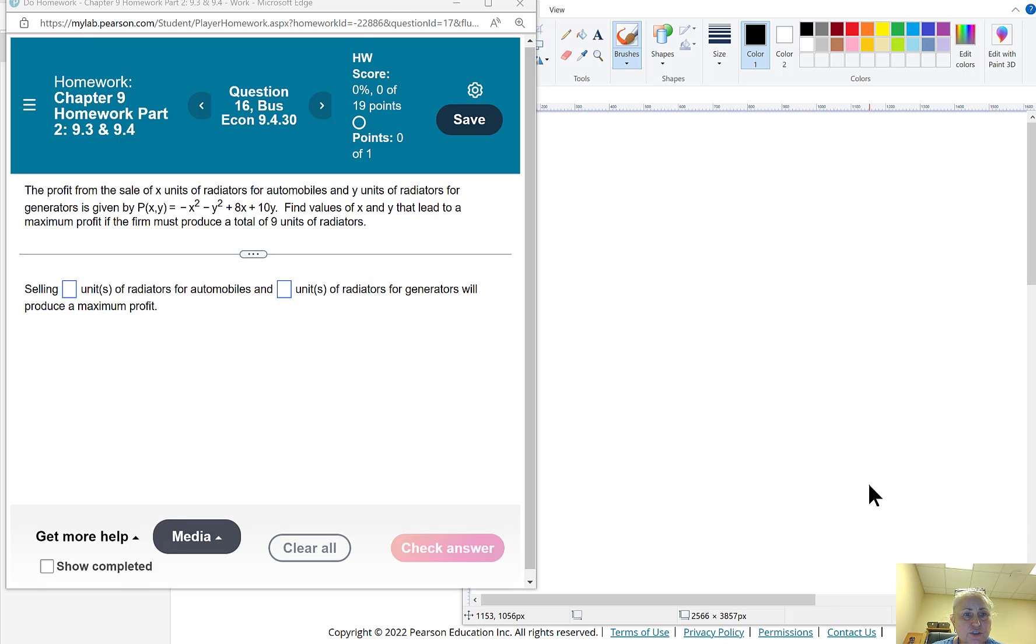The profit from the sale of x units of radiators for automobiles and y units of radiators for generators is given by the function p(x,y) equals negative x squared minus y squared plus 8x plus 10y. We're supposed to find values of x and y that lead to a maximum profit if the firm must produce a total of 9 units of radiators.